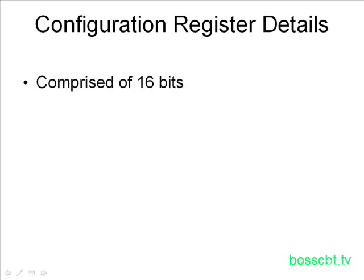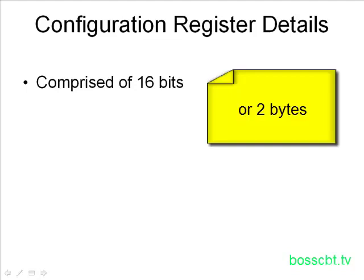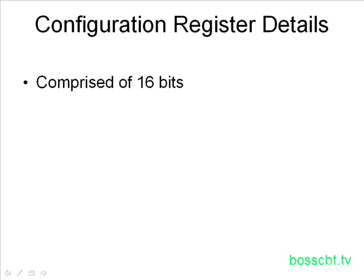Let's look at some details about the configuration register. First, this is a 16-bit value — that's a 2-byte value because there are 8 bits in a byte. We have 16 bits, 2 bytes, and each one of these bits has a meaning. It's either turned on or turned off; either we pay attention to it or we ignore it. That's the first thing to know: it's a 16-bit value.